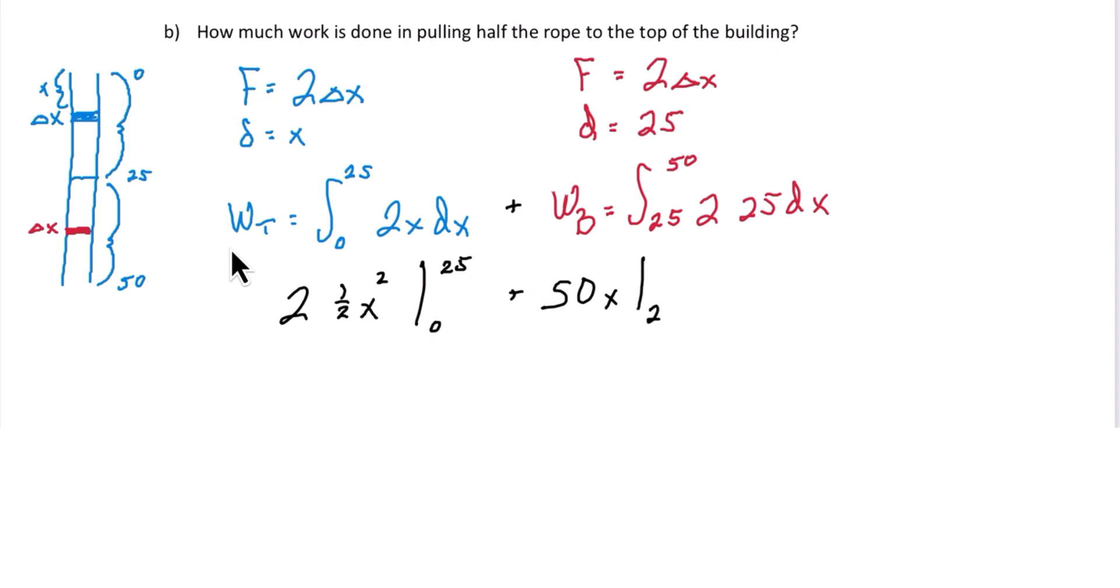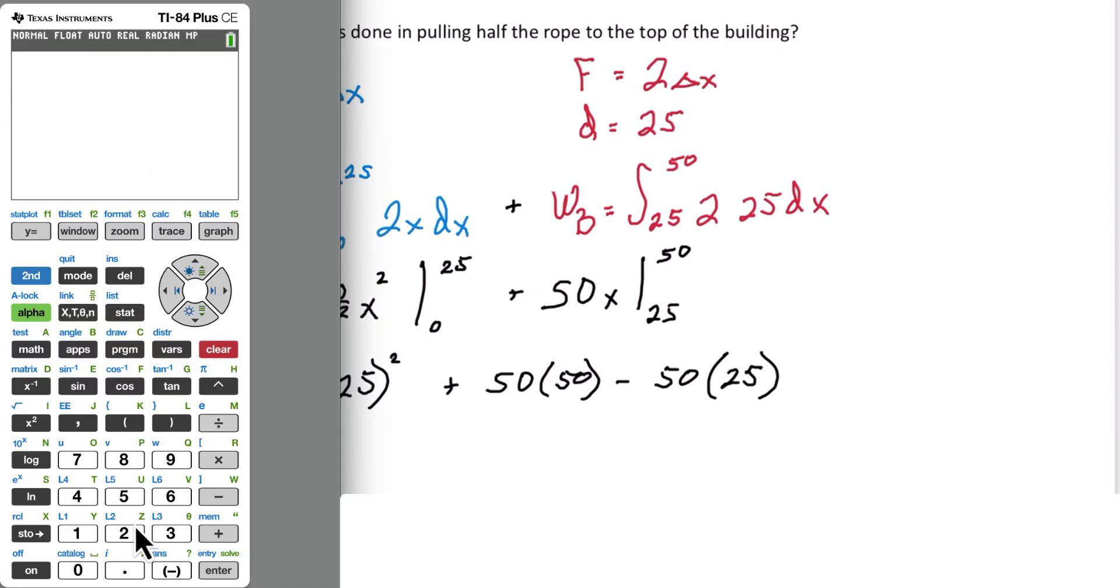2 times 1 half is just 1. That means we have 25 squared minus 0 plus 50 times 50 minus 50 times 25. This will give us 1,875. And the units in this case, foot-pounds.